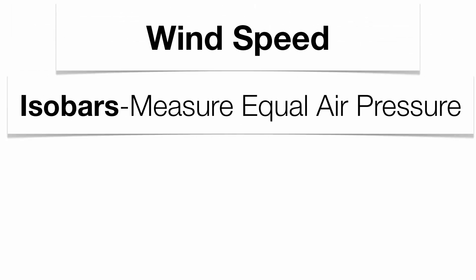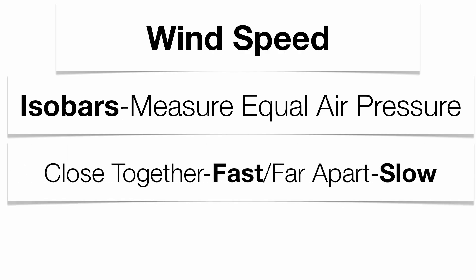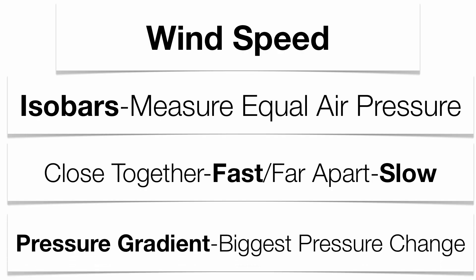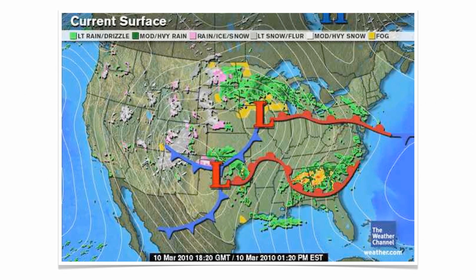With wind speed, when you look at a weather map, look at the isobars. Isobars are lines that measure equal air pressure. When those lines are close together, you have very fast winds. When they're far apart, you have very slow winds. This is what we call the pressure gradient, and to identify whether you have a fast or slow wind, look for the biggest pressure change.